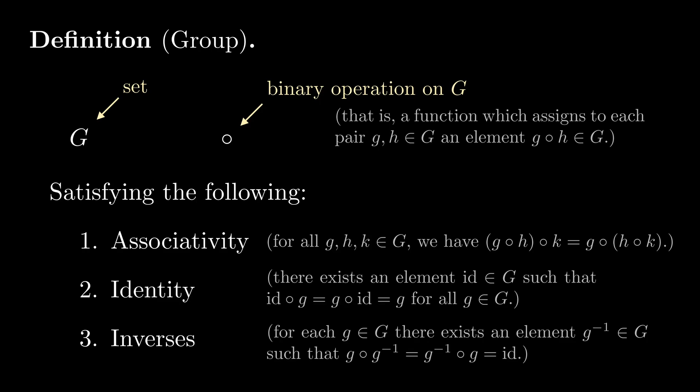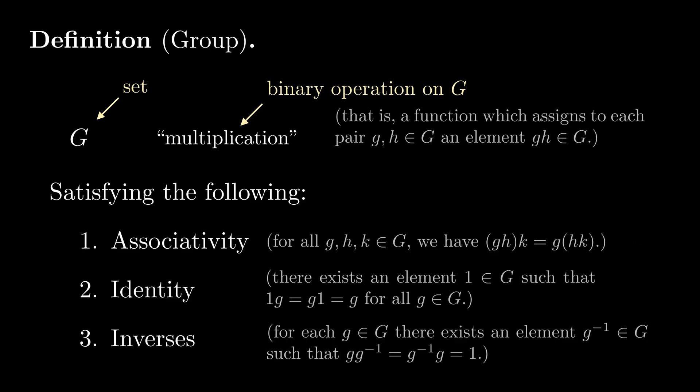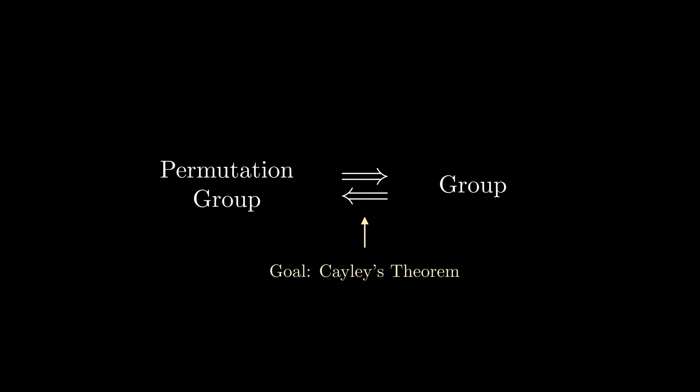In order to abstract away from viewing group elements as concrete permutations of a set, it's convention in group theory to call composition multiplication instead, and to omit the corresponding symbol. And since we're now calling it multiplication, we might as well write 1 to denote the identity instead of id. As we just saw, every permutation group is a group. It may be surprising that the converse is true as well — every group arises from some permutation group. This fact is known as Cayley's theorem, and proving it will be our first major goal in this video.